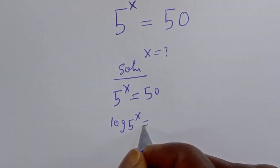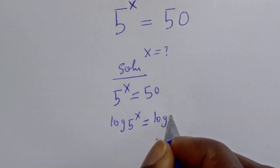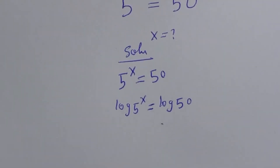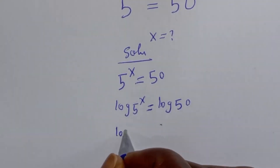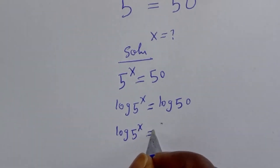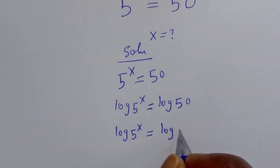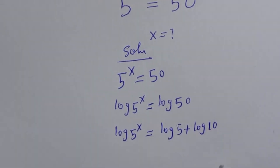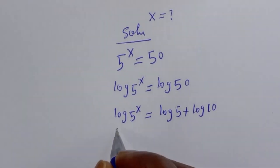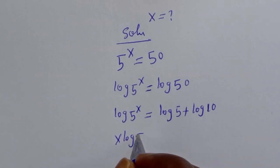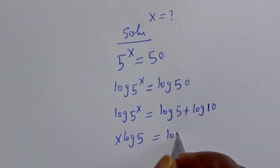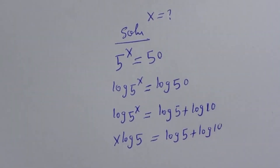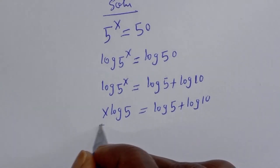Log 5 raised to power s is equal to log 50, which can be written as log 5 plus log 10. Then here, s times log 5 is equal to log 5 plus log 10. Let's divide both sides of this equation by log 5.